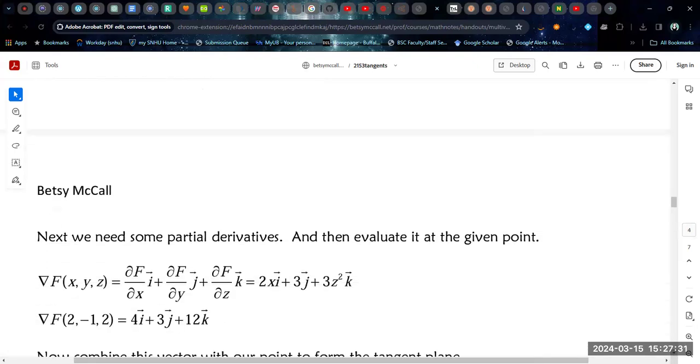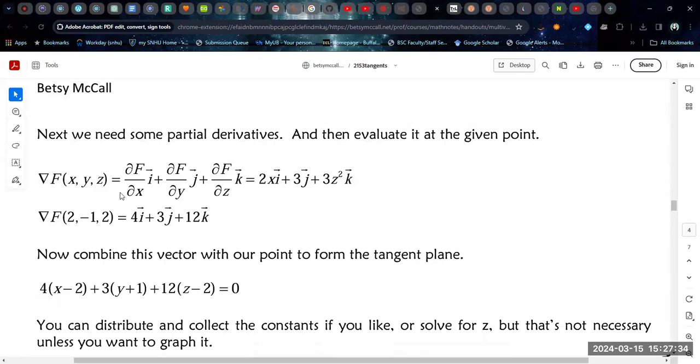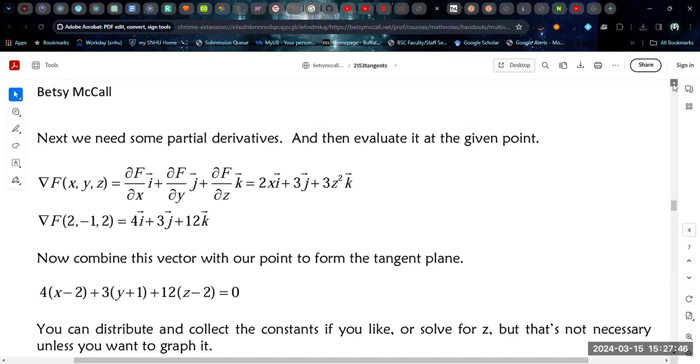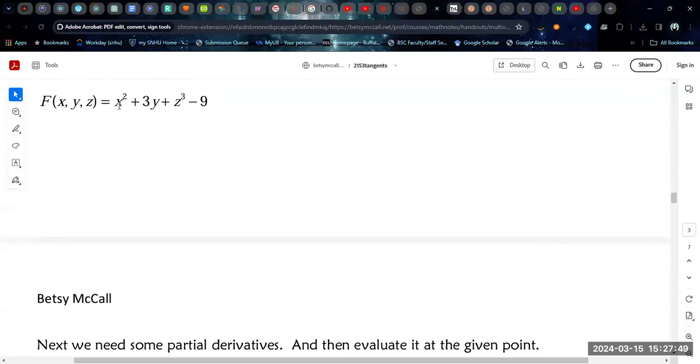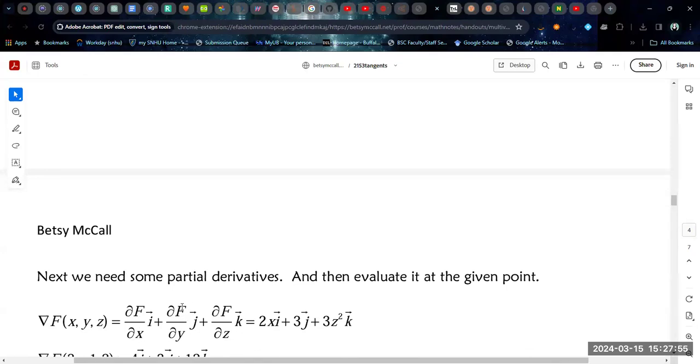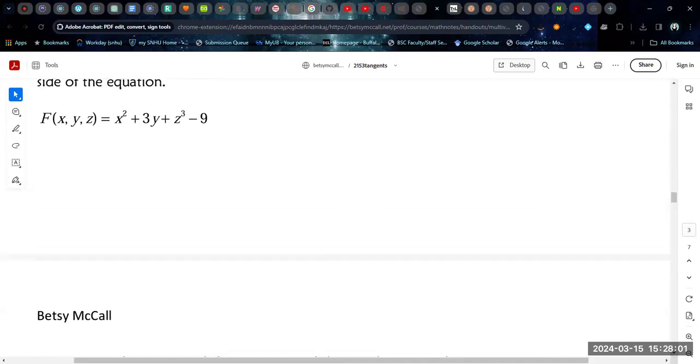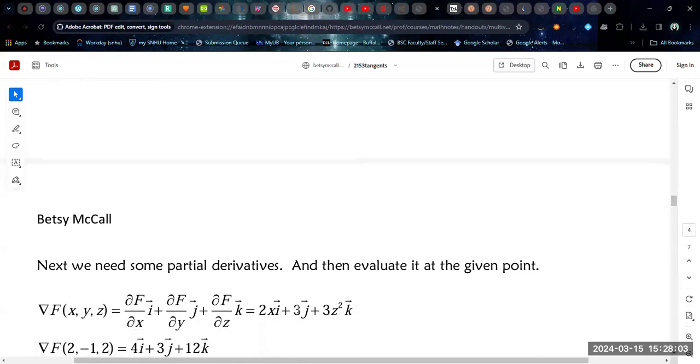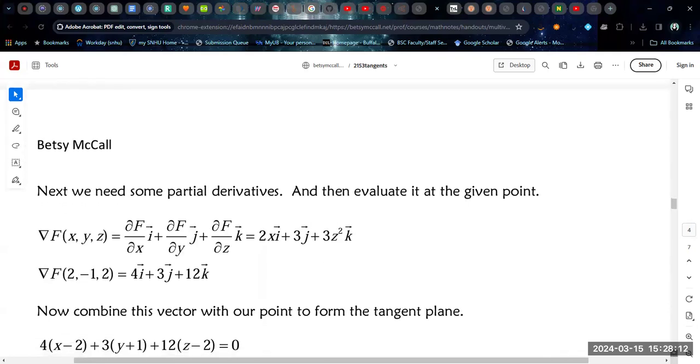And then the next thing I do is I take the gradient, and the gradient is just a vector composed of the partial derivatives. So the first component is the derivative, the partial derivative of this big F function with respect to X. So big F, X squared, the derivative of that is 2X. The derivative of big F with respect to Y, this was 3Y, so the Y component is just 3. And then the derivative of big F with respect to Z, that was Z cubed, and so the derivative of that is 3Z squared.